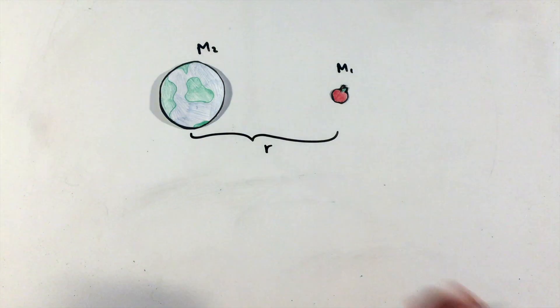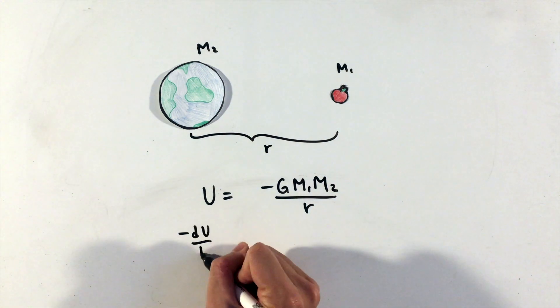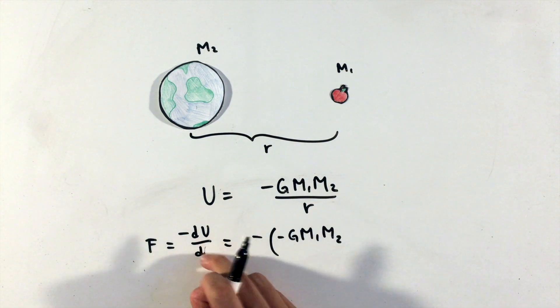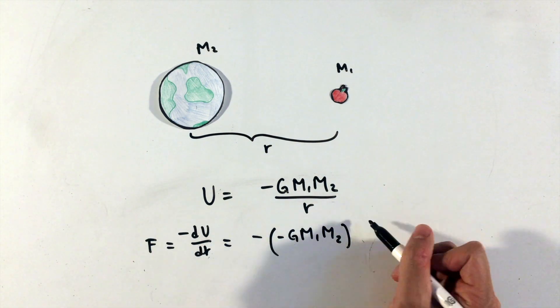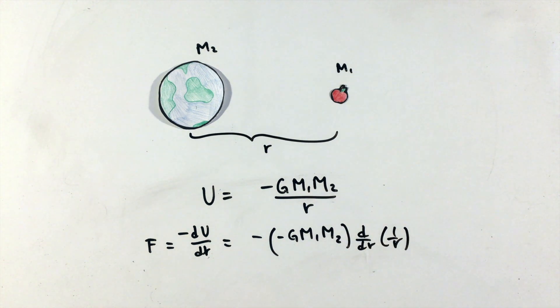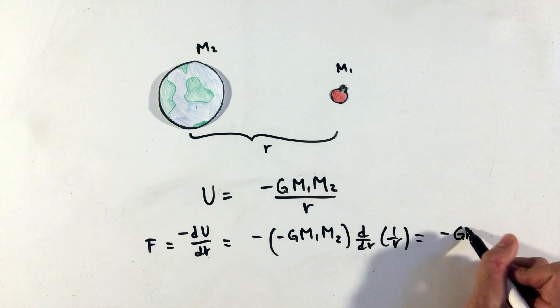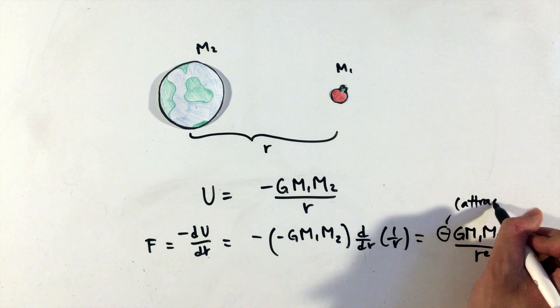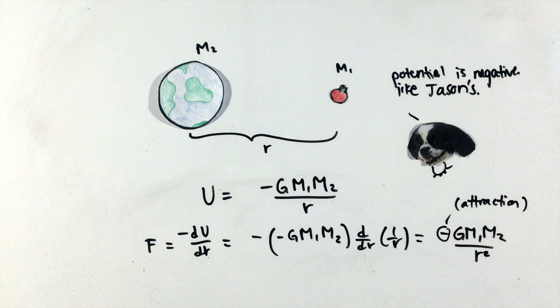In addition, the gravitational potential energy between two objects in space is given by this equation. Remembering from our work in energy video that the force field that produces a potential energy function is the negative derivative of the potential energy, we can arrive back at our original force equation from before.